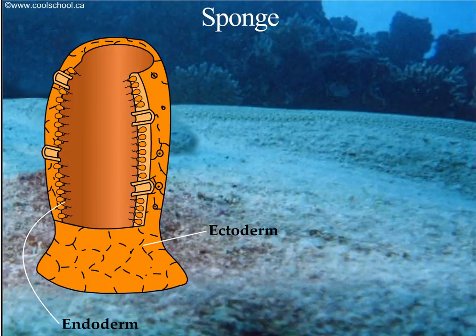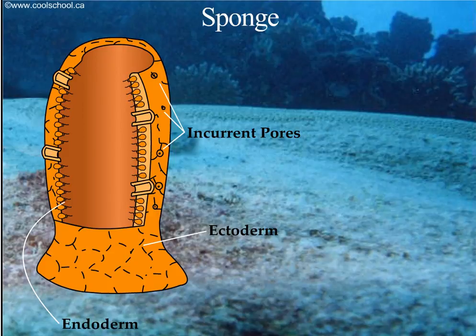Porifera means pore bearer. The sponges have thousands of incurrent pores that bring water, nutrients, and oxygen into the sponge.